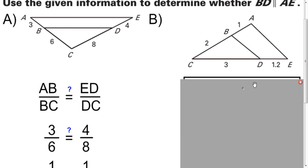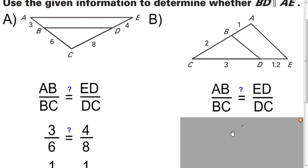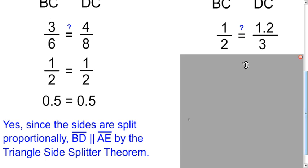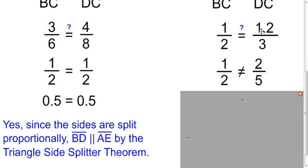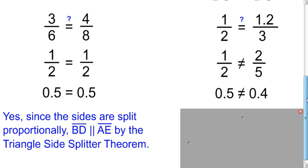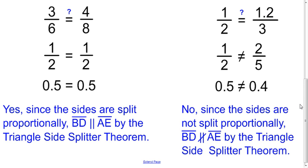On the right-hand side, let's look here. Same idea. Set up that proportion. We don't know if it's true or not. Then we substitute. And are these two fractions equal? Well, 1 over 2, that doesn't simplify. And this, I multiply top and bottom by 10, right? That's 12 over 30, and that simplifies to 2 fifths. Those aren't equal. In terms of decimals, you get 0.5 is not equal to 0.4. So no. Those sides are not split proportionally, so the sides aren't parallel by the side splitter theorem.